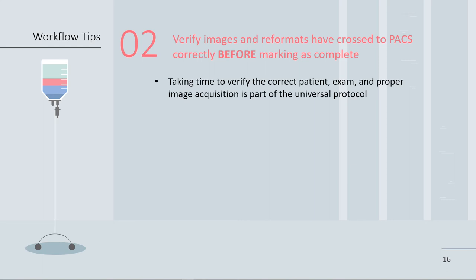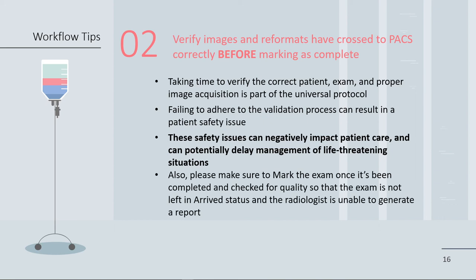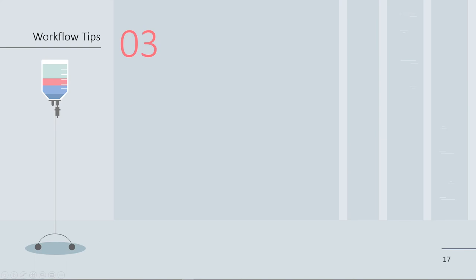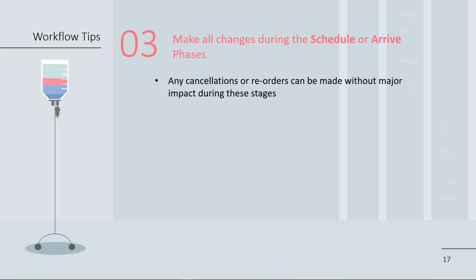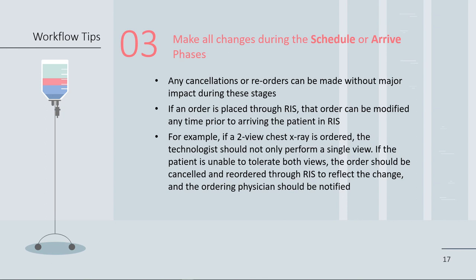Taking the time to verify the correct patient exam and proper image acquisition is part of the universal protocol. Failing to adhere to the validation process can result in a patient safety issue. These safety issues can negatively impact patient care and can potentially delay management of life-threatening situations. Also, please make sure to mark the exam once it's been completed and checked for quality, so that the exam is not left in arrived status, because the radiologist will not be able to generate a report in a timely manner. Make all changes during the schedule or arrived phases — any cancellations or reorders can be made without major impact during these stages. If an order is placed through RIS, that order can be modified at any time prior to arriving the patient in RIS. For example, if a two-view chest x-ray is ordered, the technologist should not only perform a single view. If the patient is unable to tolerate both views, the order should be cancelled and reordered through RIS to reflect the change, and the ordering physician should be notified.